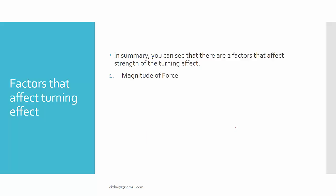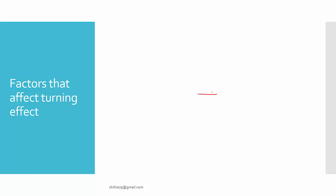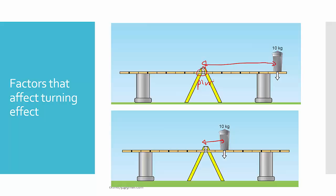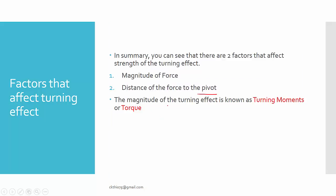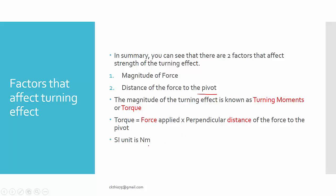In summary, the turning effect depends on two factors: the strength or magnitude of the force — for example, whether it is 5 kg or 10 kg — and the distance of the force from the pivot. The magnitude of this turning effect is known as torque or turning moment. Torque equals force multiplied by the distance from the force to the pivot, and its unit is Newton meter.